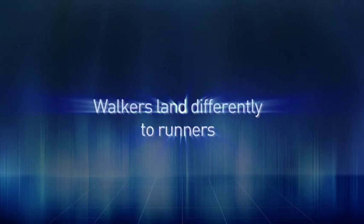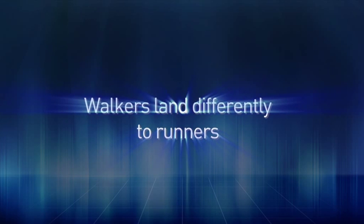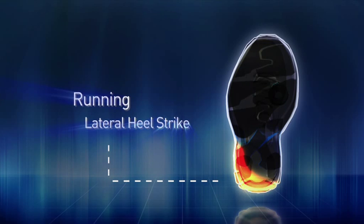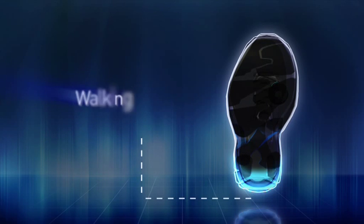Walkers land differently to runners on the heel of the foot. A running stride causes a more lateral heel strike. However, when walking, the heel strike is more centred.